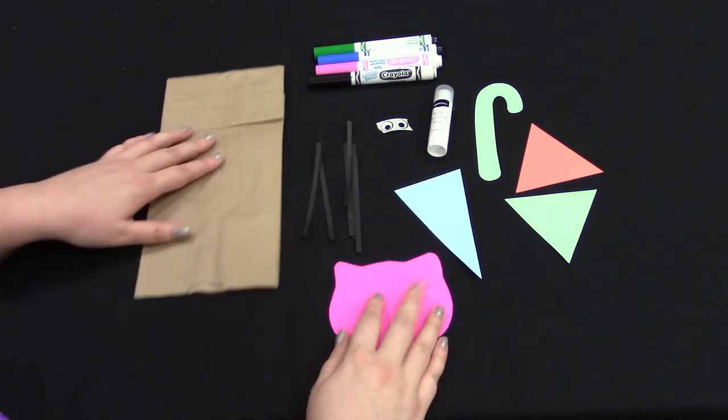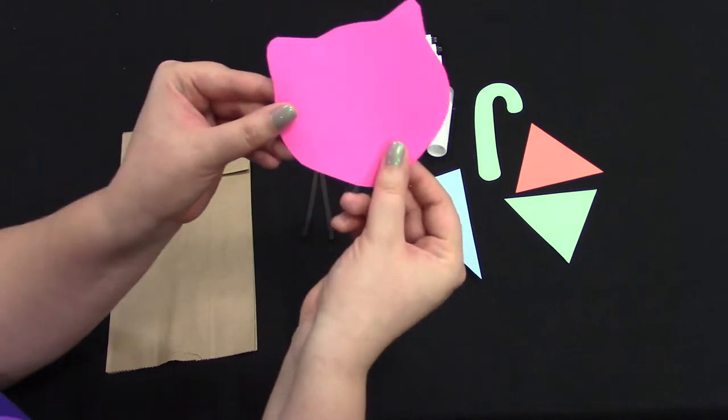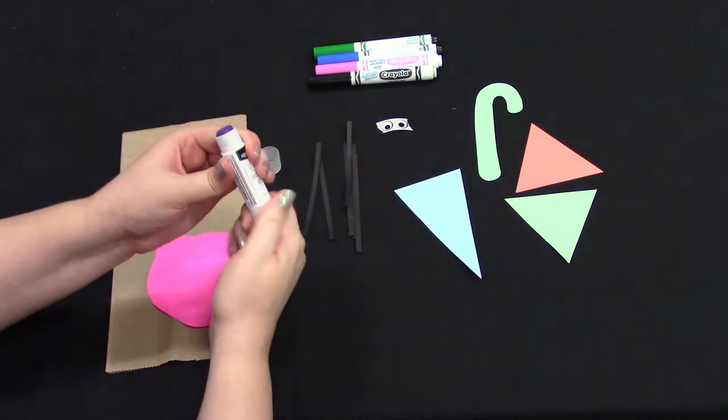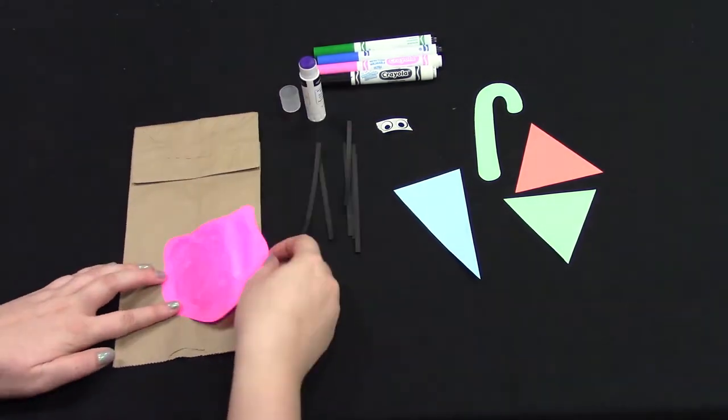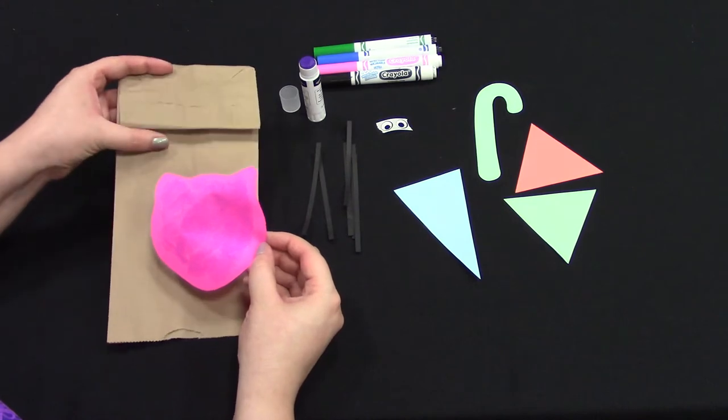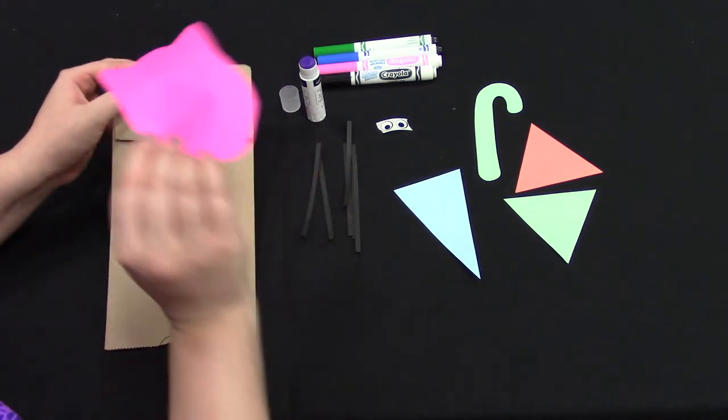Take your tiger head, and as you can see there is no front or back, so you're just going to cover one side with glue. Stick your tiger head to the flap on your bag, sticky side down.